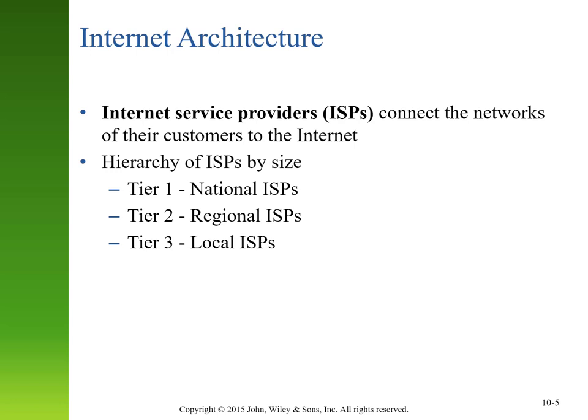There are various Internet service providers around the world that connect private networks to one another and connect their customers to the Internet at large. Internet service providers have varied in size historically — we tend to think about them in terms of tiers. An Internet service provider that is national would be a Tier 1 ISP. ISPs that are more regional would be Tier 2, and a local Internet service provider would be Tier 3. Because of consolidation, we don't see this clear delineation as much anymore in the U.S., but there are still some regional and local ISPs that operate much like they did a few years ago.